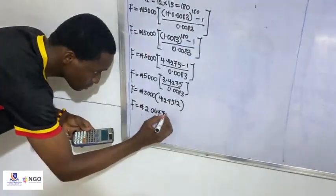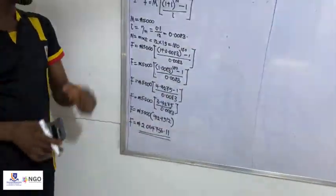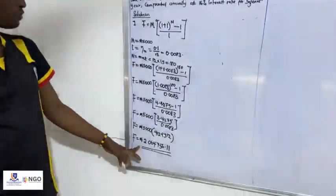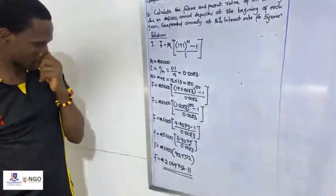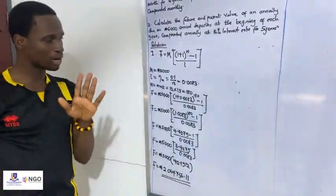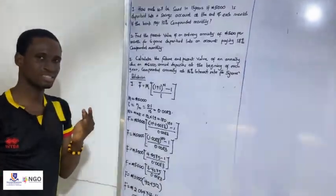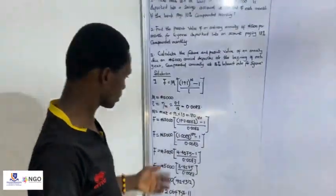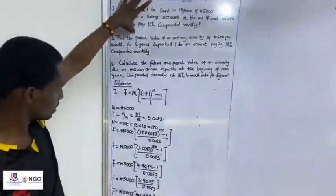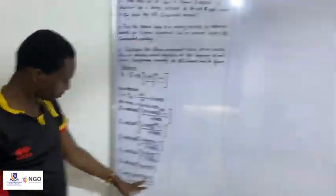The future value is 2,064,756.11. So if you save 5,000 monthly using an annuity mode of payment, whether using simple interest, compound interest, or annuity, each mode of investing has its advantages depending on the business. Using an ordinary annuity mode of payment, saving 5,000 for 15 years amounts to 2,064,756.